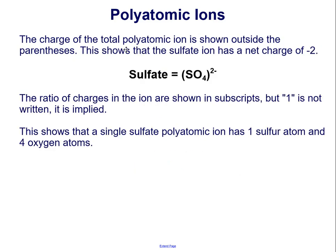The charge of the total polyatomic ion is shown outside the parentheses. This shows that the sulfate ion has a charge of negative 2, or 2 minus. The ratio of charges in the ion are shown in subscripts, but one is not written — it is implied. So there is one sulfur atom for every four oxygen atoms; the subscript one is implied. This shows that a single sulfate polyatomic ion has one sulfur atom and four oxygen atoms.